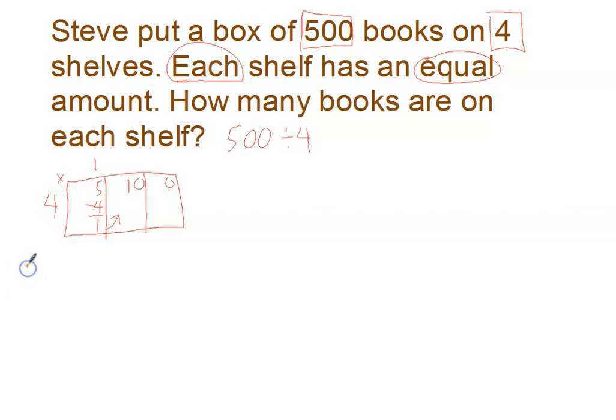I now have ten in my second box. How many fours in ten? That would be two. Two times four is eight. I subtract. I'm now at two. Bring it up. I now have twenty in my third box. And how many fours in twenty? That would be five. Five times four is twenty. And there's no remainder on this one.